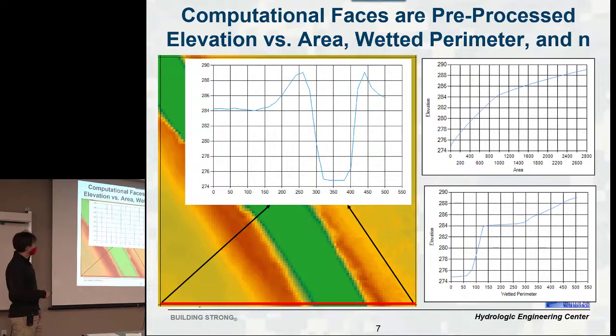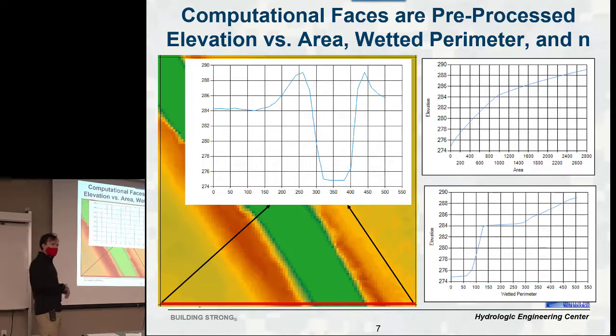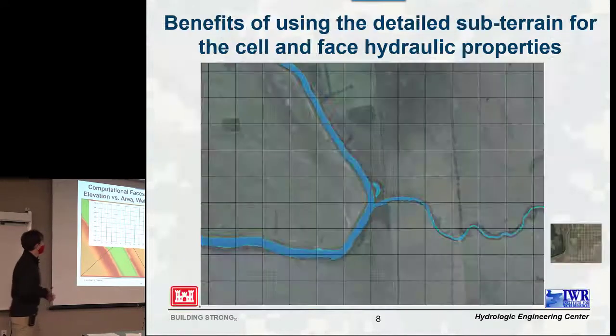Similarly, at the faces, it extracts the cross-section or profile of the terrain, and it computes other hydraulic property tables. Like this is vertical area versus elevation, and this is wetted parameter. And from those, you can back out what hydraulic radius is, and then you can compute conveyance and a whole bunch of other variables.